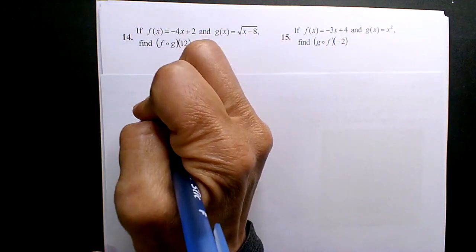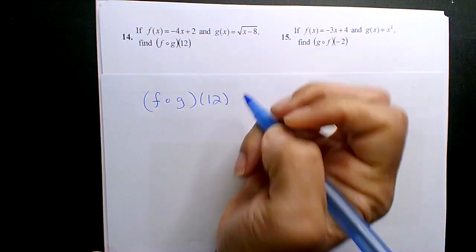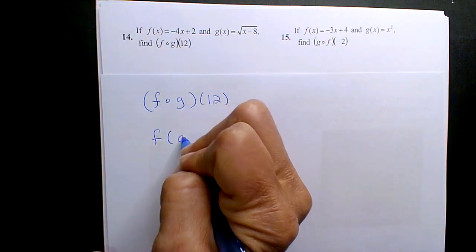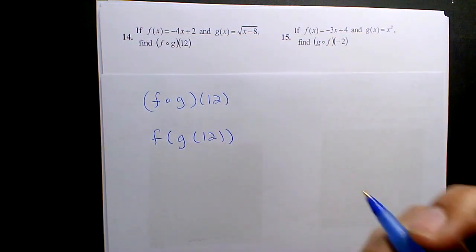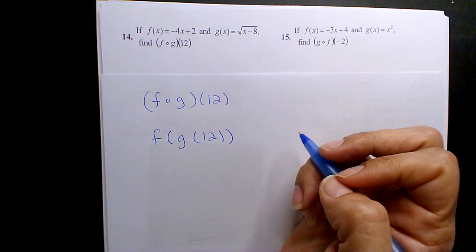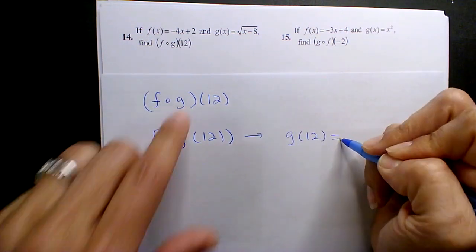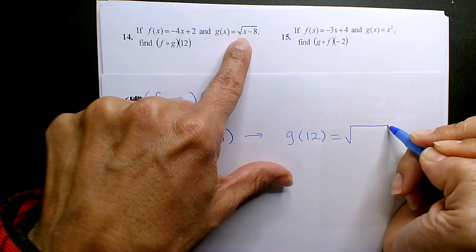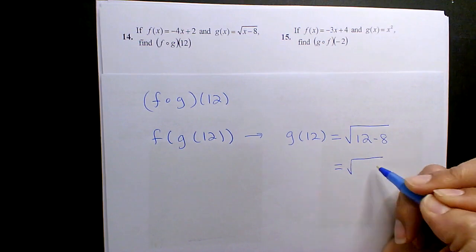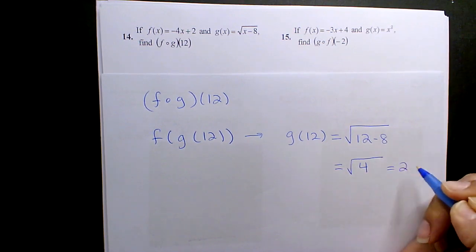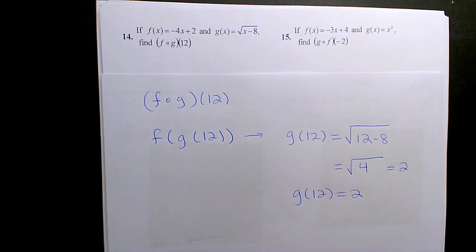So this F-O-G-Fog of 12 is the same thing as F of G of 12. If you want to do it in two parts, this is one option. You can first take G of 12. So if the function is radical X minus 8, it's 12 minus 8, and so that's 4, and the square root of 4 is 2. So G of 12 gives the output 2.